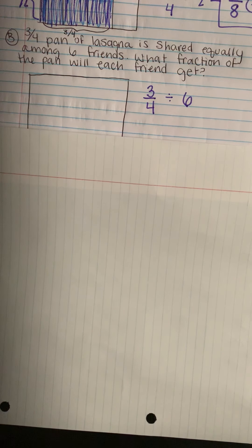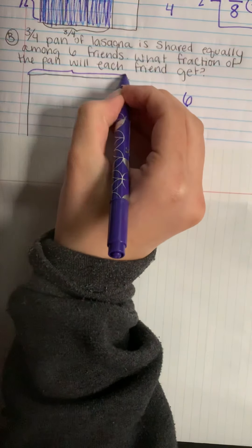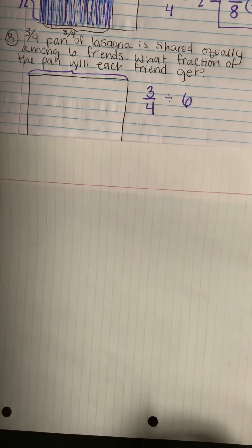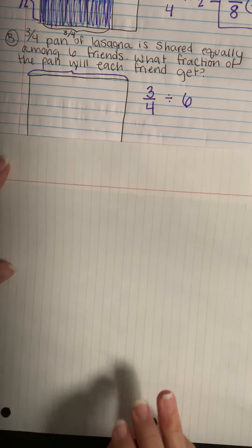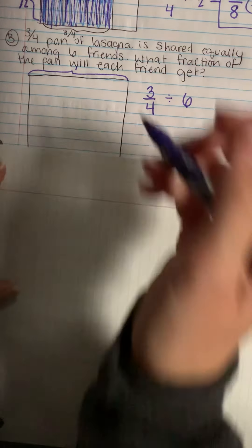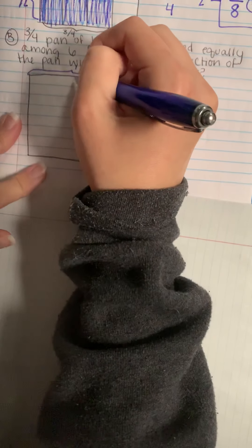When we're solving this problem, we can also think three-fourths is sixth groups of what? And using our area model to solve, I know that our entire model this way is representing one whole. And now I have to show how much lasagna is being shared. So I'm going to start by dividing the pan into fourths and then I'll show three of those fourths.